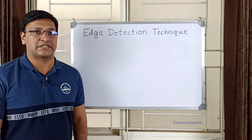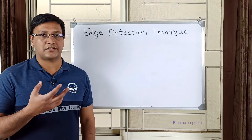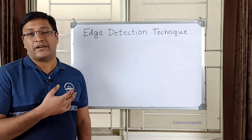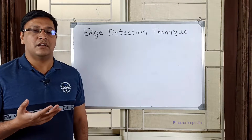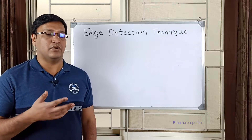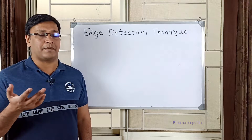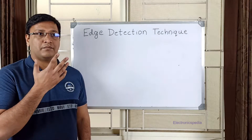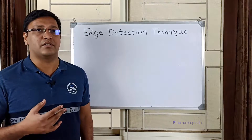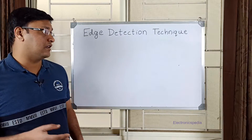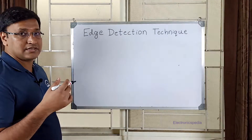Hey guys, welcome to my channel Electronicspedia. In this video I'm going to explain edge detection techniques. Edge detection is basically used for converting a level signal into a pulse signal. You can generate a pulse on the positive edge or the negative edge of a level signal, and I'm going to explain both techniques — positive edge detection as well as negative edge detection.